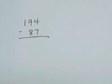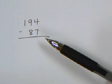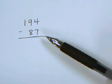This lesson is on subtraction with regrouping, and what I mean is any time that you have to subtract and borrow from another place, like in this problem, 194 minus 87.